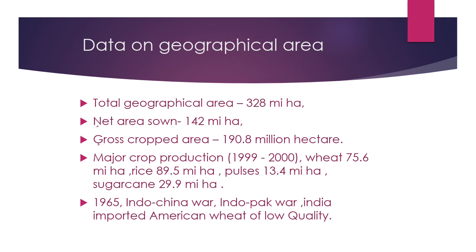Looking at the major crop production scene, data was acquired in 1999 and 2000. Production is high because the Green Revolution of 1965 achieved quite a lot of results through the HYV — High Yielding Variety — program.